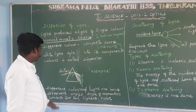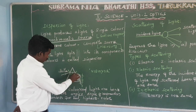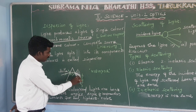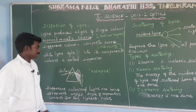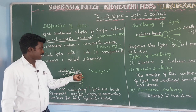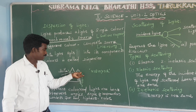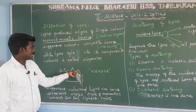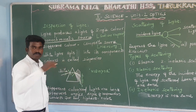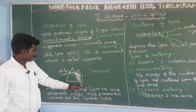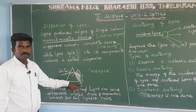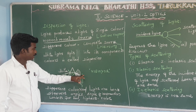When white light splits, different colors bend at different angles. The angle of refraction is lowest for red — red is the least deviated. The angle of refraction is highest for violet — violet is the most deviated.